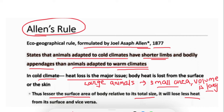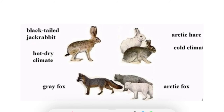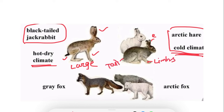Let's look at an example to get a clearer idea. Compare the black-tailed jackrabbit and the Arctic hare — these are close relatives. The Arctic hare is present in the colder climate, while the black-tailed jackrabbit is present in the hot climate. If you look at their appendages — the ears, limbs, and tails — these are large in the hot climate, whereas in the cold climate they have smaller ears, smaller limbs, and a smaller tail, reducing surface area to prevent heat loss.